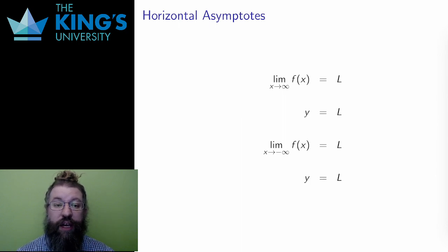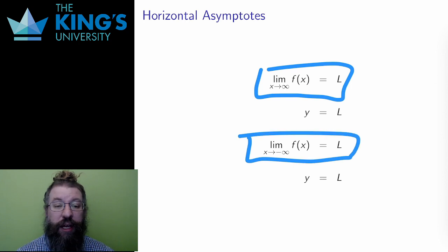Any limit of this type, either the limit approaching positive or negative infinity, where the function stabilizes, produces a horizontal asymptote.